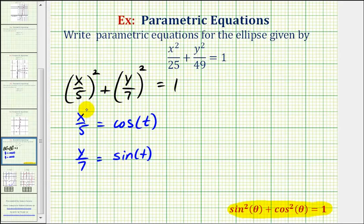Now to finish, we'll solve this equation for x and this equation for y. So we multiply both sides by 5, we have x equals 5 cosine t, and the second equation would be y equals 7 times sine t.